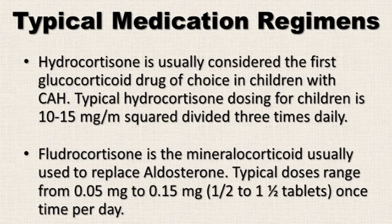Hydrocortisone is usually considered the first glucocorticoid of choice in children with CAH. Typical hydrocortisone dosing for children is 10 to 15 milligrams per meter squared, divided three times daily.